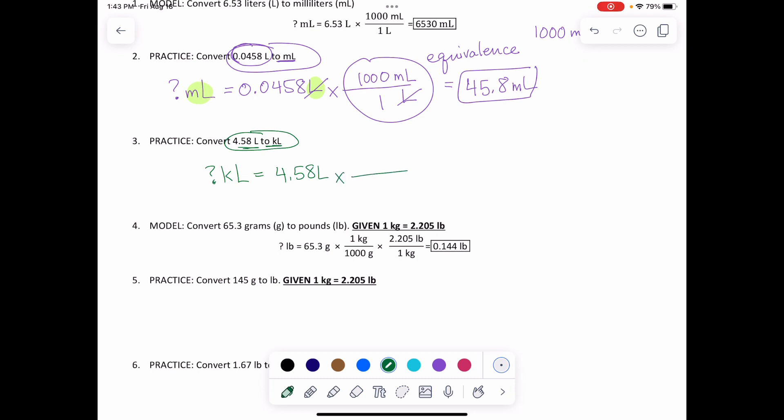I do times in my ratio sign and no ifs, no ands, no buts. I see a liter right there. It's got to go right there so that it cancels.